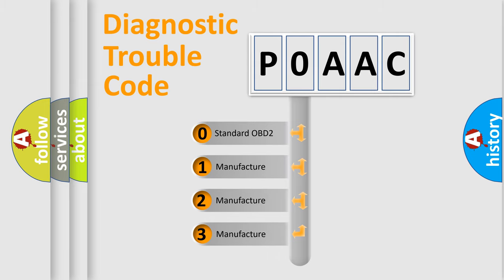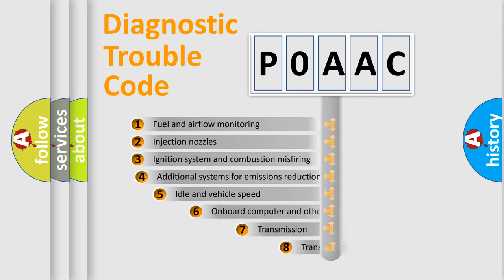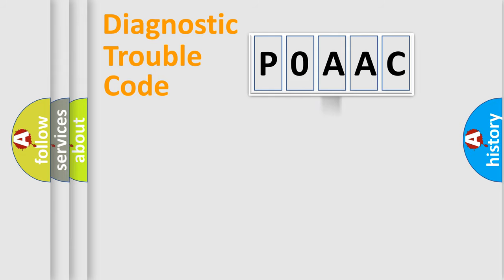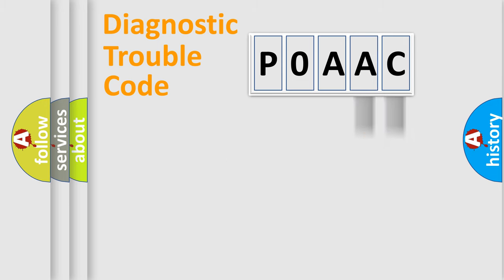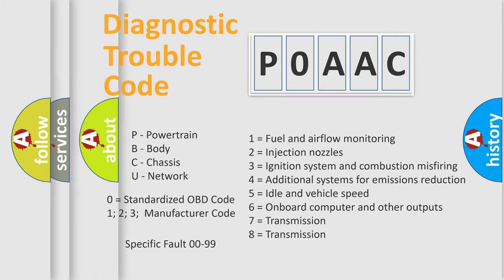If the second character is expressed as zero, it is a standardized error. In the case of numbers 1, 2, or 3, it is a more specific expression of a car-specific error. The third character specifies a subset of errors. This distribution is valid only for the standardized DTC code. Only the last two characters define the specific fault of the group, and this division is valid only if the second character is expressed by the number zero.